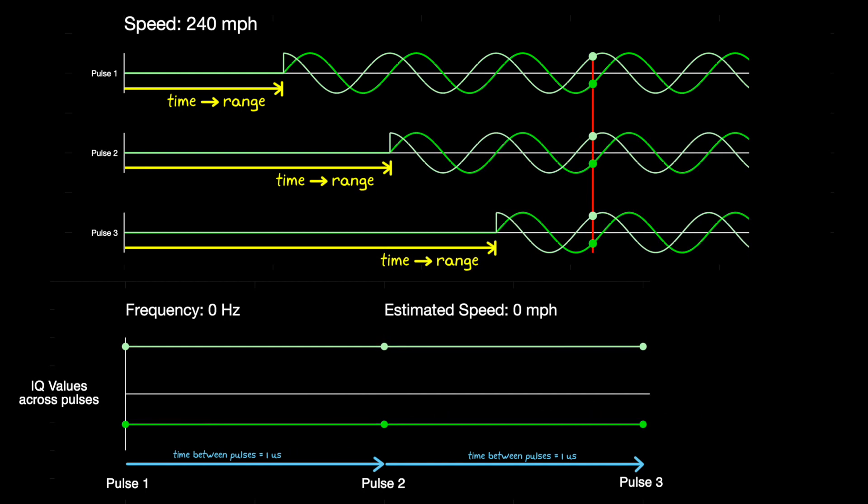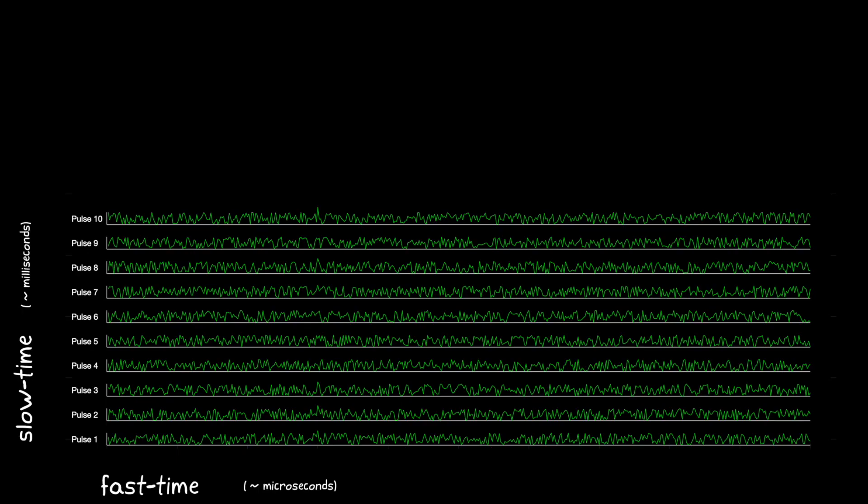This is called the radar blind speed, and it occurs at velocities that produce integer multiples of the wavelength of the transmit signal.